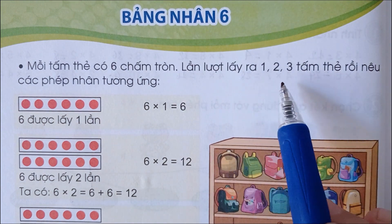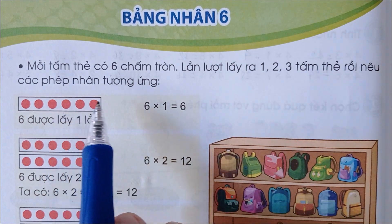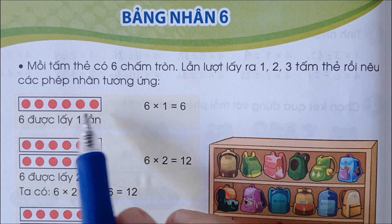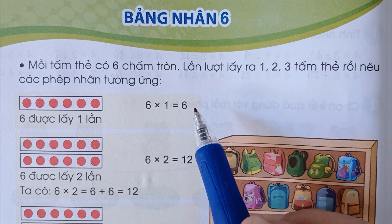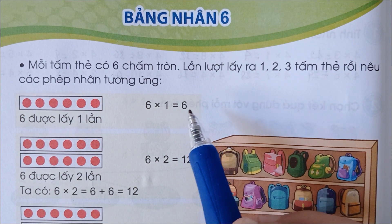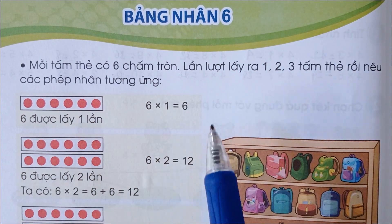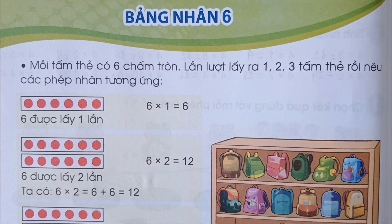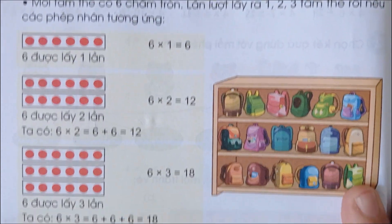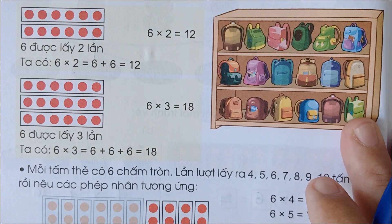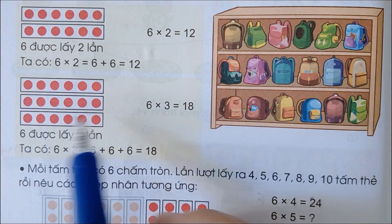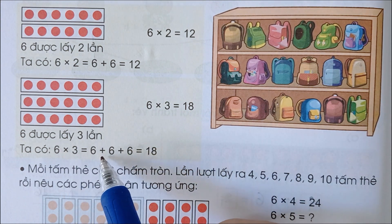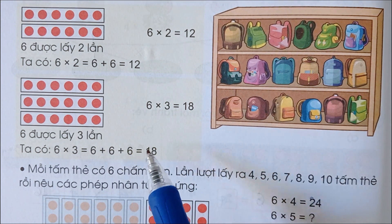Lần lượt lấy ra 1, 2, 3 tấm thẻ rồi nêu các phép nhân tương ứng. Một tấm thẻ có 6 chấm tròn mà ta lấy 1 tấm thẻ thì ta lấy 6 x 1 bằng 6. 2 tấm thẻ: 6 x 2 bằng 12. 3 tấm thẻ thì 6 x 3 bằng 18.